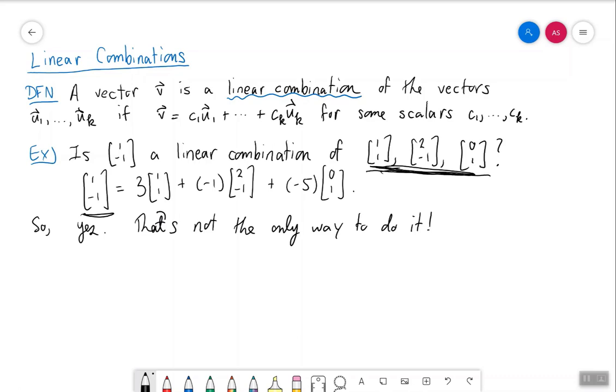In fact, we will see later exactly how we'll go about figuring out whether a given vector is a linear combination of some others and finding all the ways in which it is.